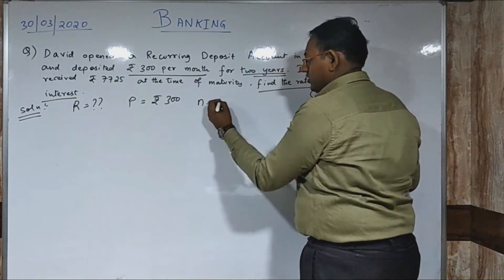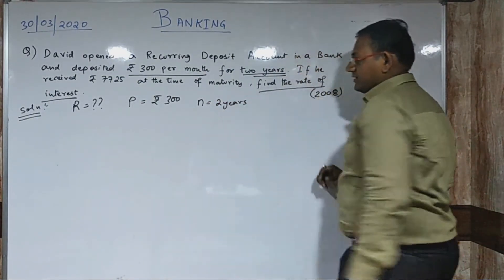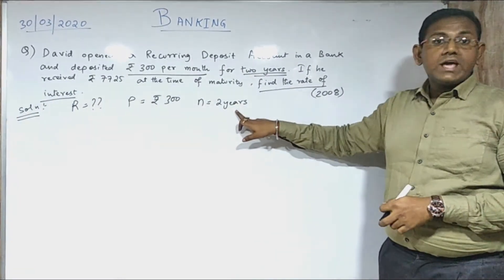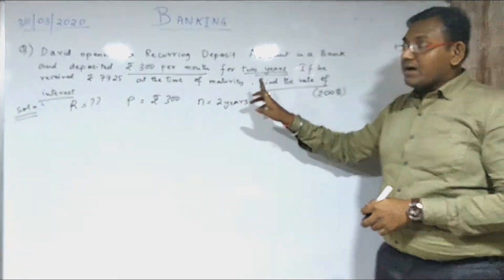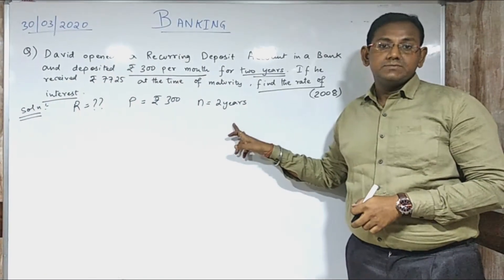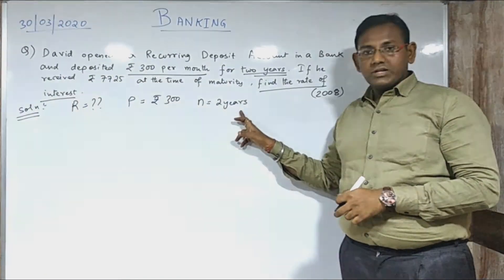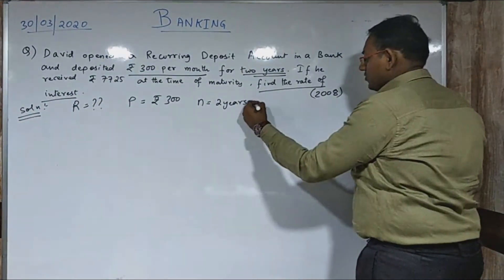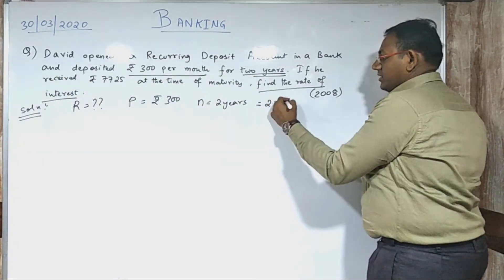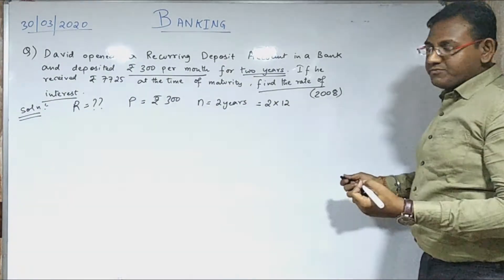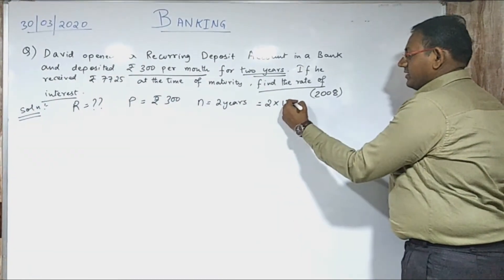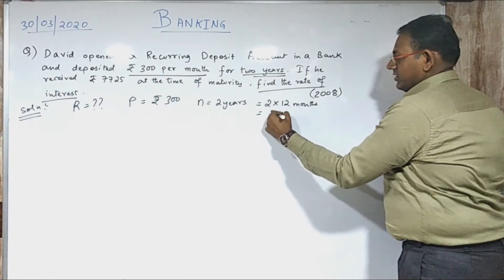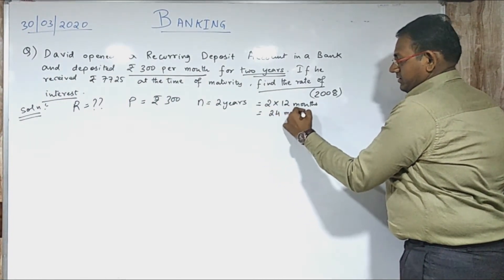So n will be 2 years. But as I have already told you, you need to calculate this on a monthly basis, not a yearly basis. So you need to convert your time into months. 2 years into 12 months gives us 24 months.